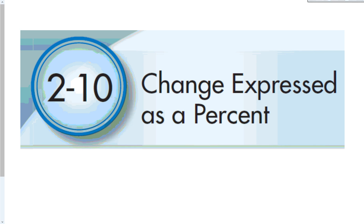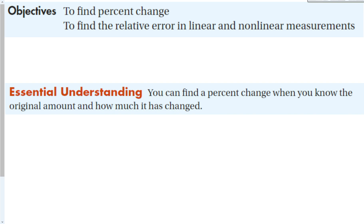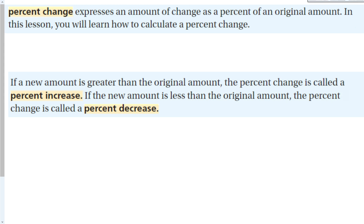In this section we are going to find percent change. We dealt a lot with percents last section, calculating different percentages of things. Now we're going to talk about percent change and use it to find the relative area error in linear and nonlinear measurements. The essential understanding is that you can find a percent change when you know the original amount and how much it has changed — you can express an amount of change as a percent of an original amount.